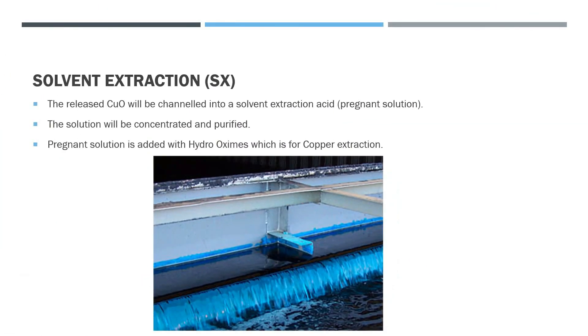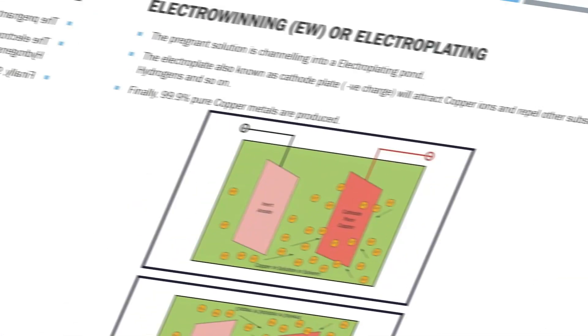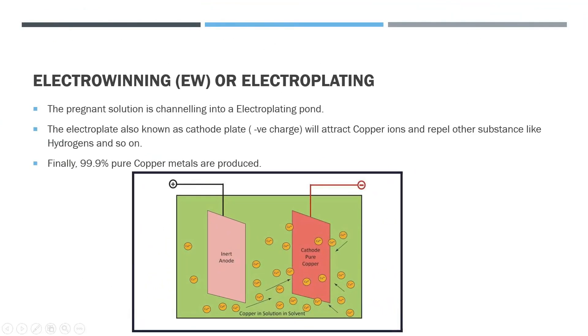Next, for solvent extraction, the copper oxide solutions will be channeled into a pregnant solution pond, which is this particular solution will be concentrated and purified. For your information, this particular solution is added with hydroxy oximes, which is for copper extraction. Finally, this is the last part that we are waiting for. The pure copper metals can be produced.